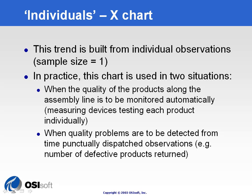The X-Chart is the first and most simple SQC trend you can think of. We're going to plot each individual against the control limits. From a PI standpoint, there is no sampling at all — every archive data making it through the archive subsystem will be plotted over the defined period of time. In practice, we're going to use this chart in two situations.